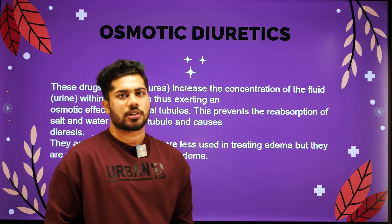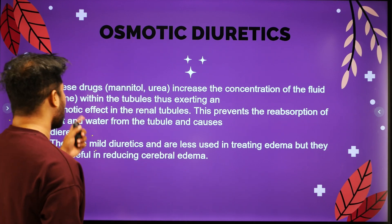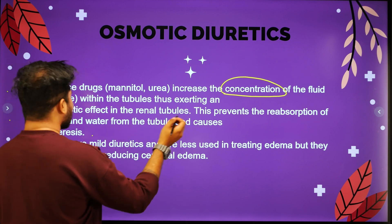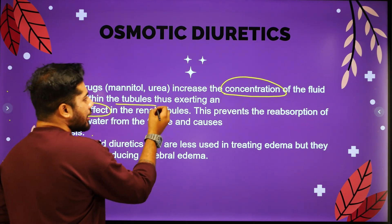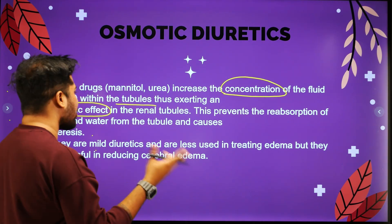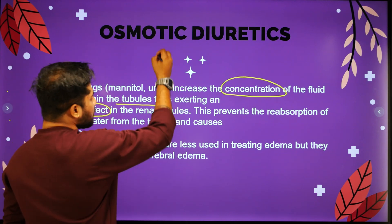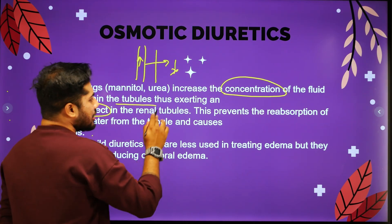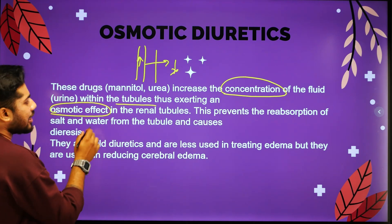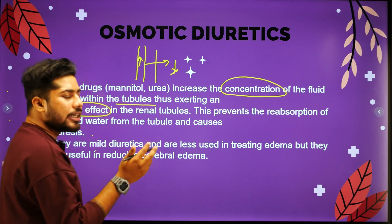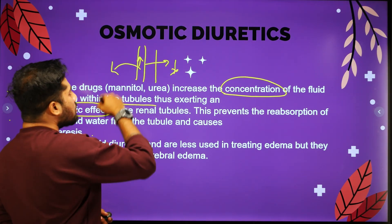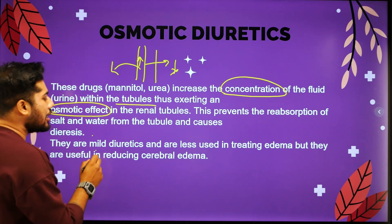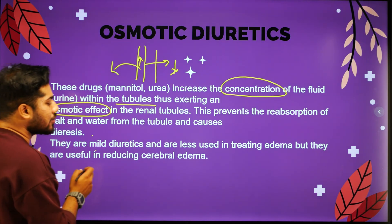Osmotic diuretics — mannitol — increase the concentration of fluid within the tubules, thus exerting an osmotic effect. The higher concentration in the tubules creates an osmotic gradient, which prevents the reabsorption of salt and water from the tubules and causes diuresis. They are mild diuretics, less used in treating edema, but useful in reducing cerebral edema.